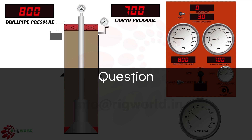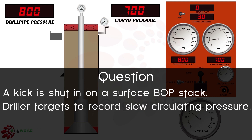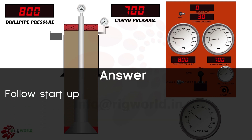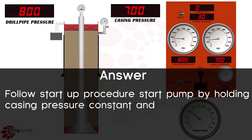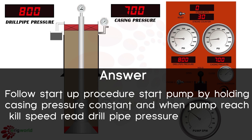Question: a kick is shut in on a surface BOP stack and the driller forgets to record slow circulating pressure. What procedure should be used to find the initial circulating pressure (ICP)? Follow the startup procedure — start the pump by holding casing pressure constant. When the pump reaches the selected kill speed, read the drill pipe pressure gauge and use it as ICP.